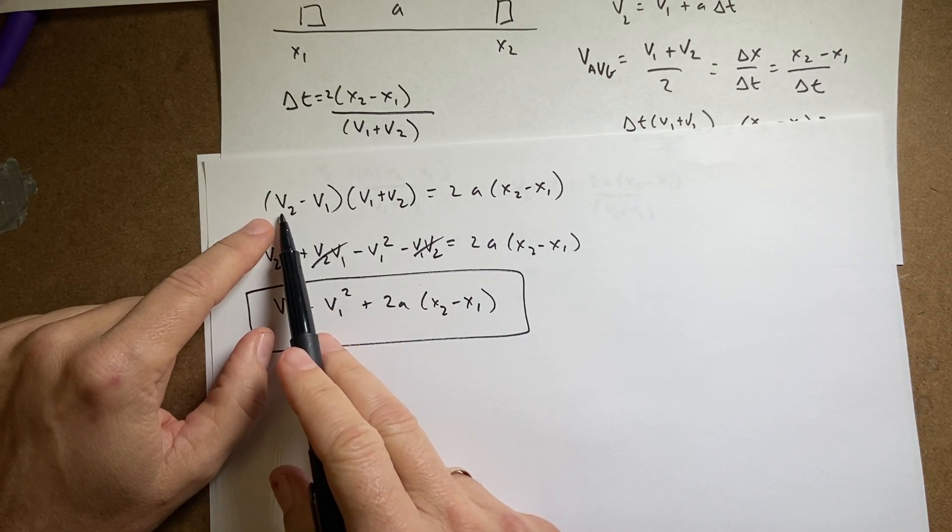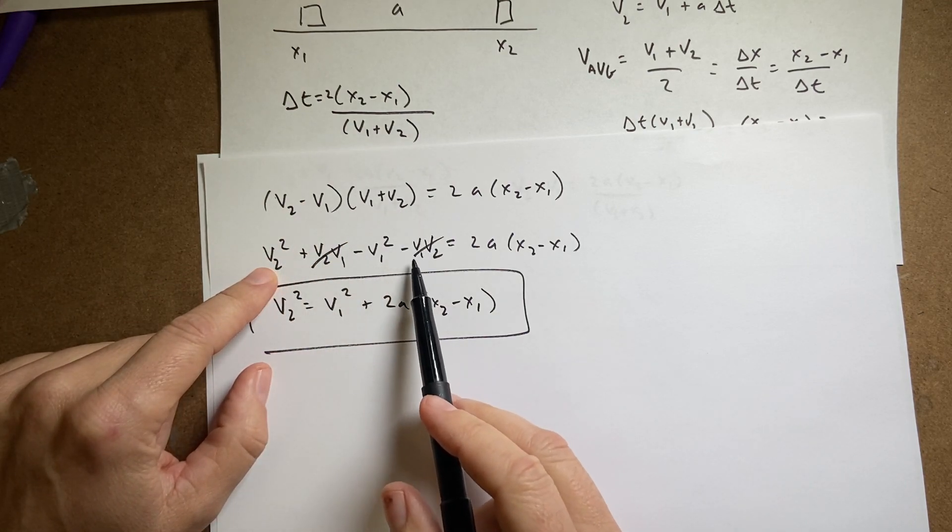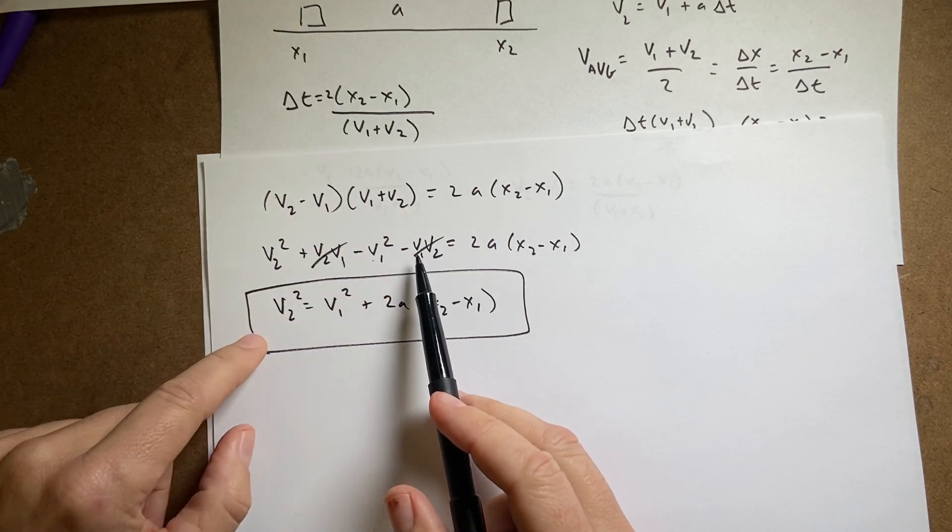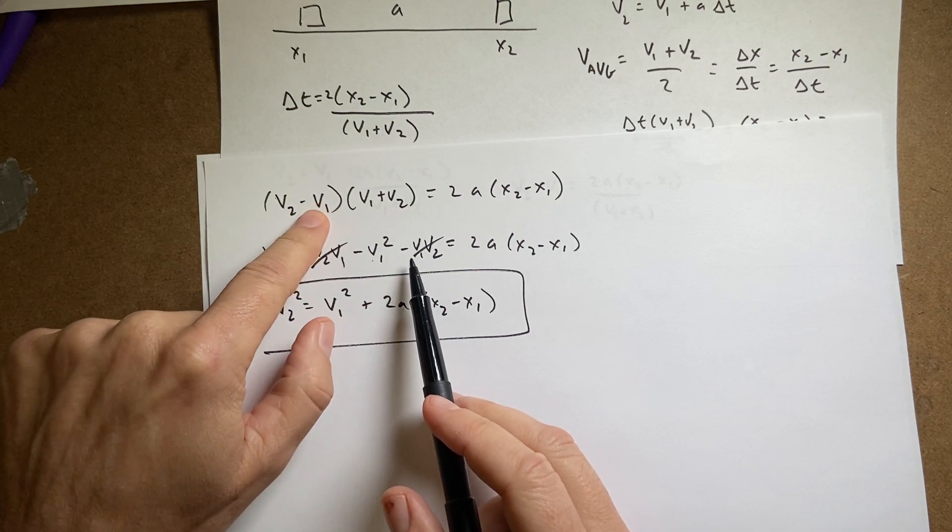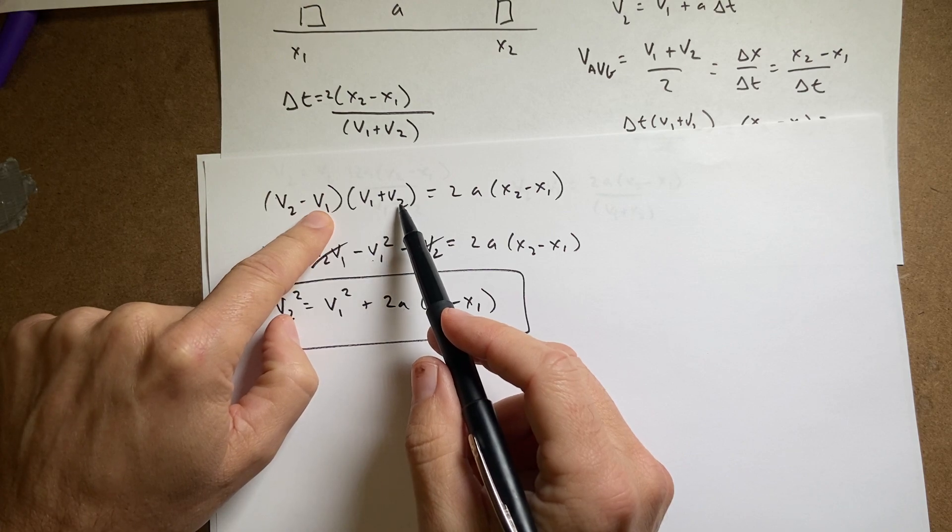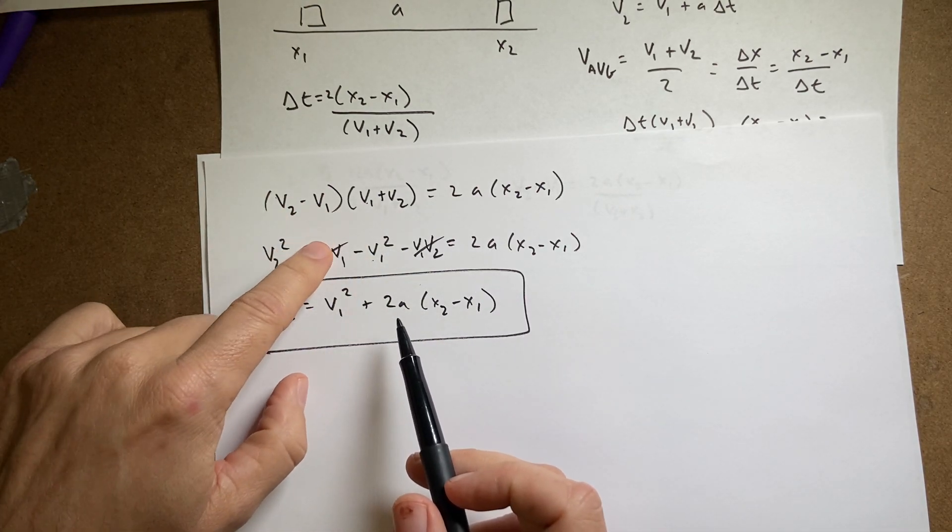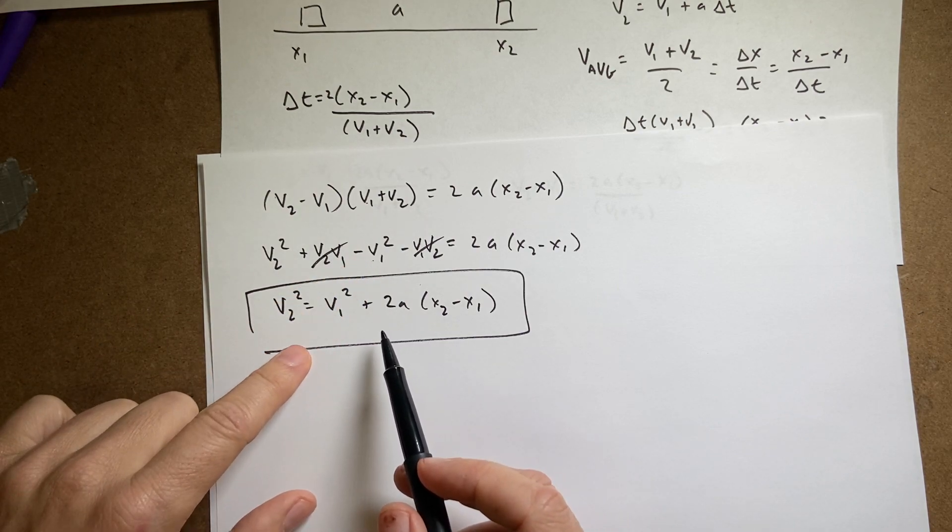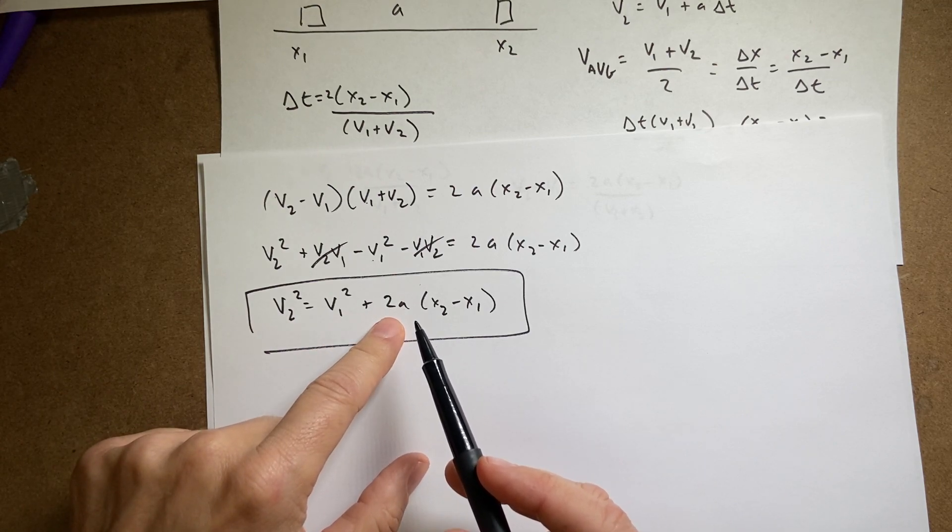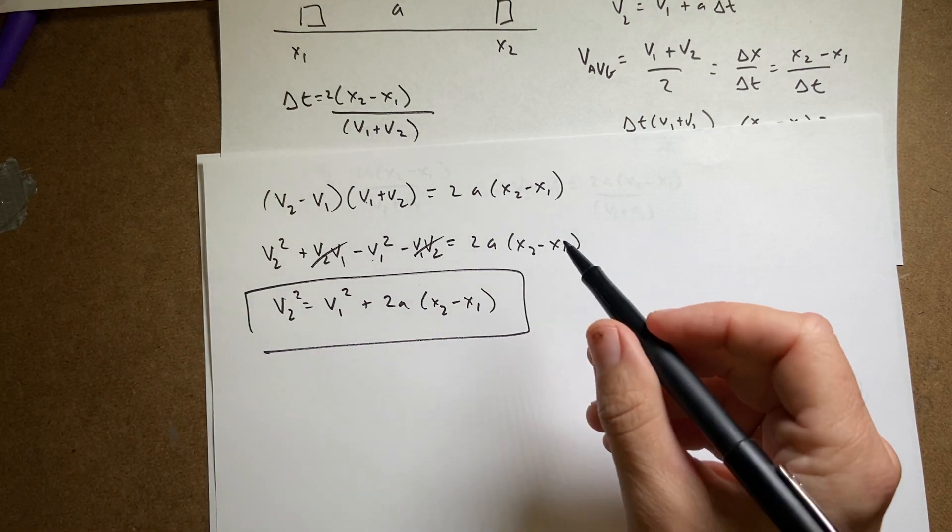Sorry about that. Okay, so just to recap v2 minus v1 I multiply this out I get v2 squared minus v1 squared right? Because I have a minus v1 and a plus v2 and then I mean a minus v1 and a plus v1 and then I get the cross terms are going to cancel because I have minus v1 v2 plus v1 v2 and those cancel and then I add the v1 squared to both sides and I get this so this is the final velocity squared is initial velocity squared plus 2 acceleration times the change in position and that's the kinematic equation.